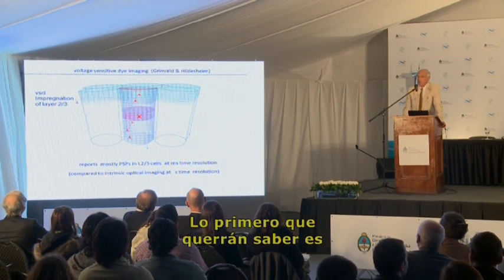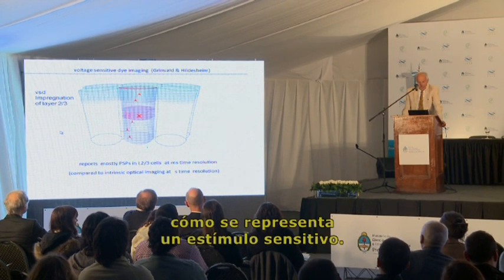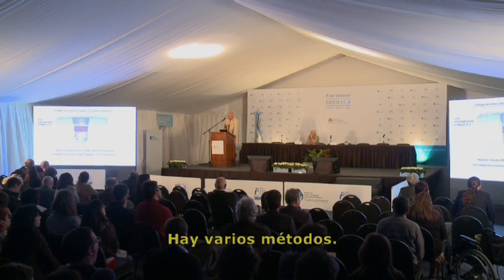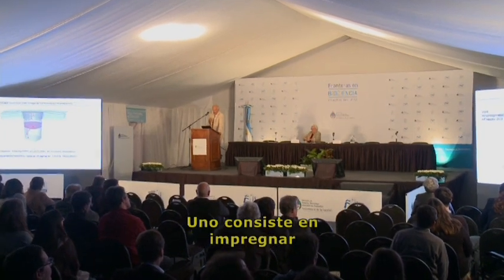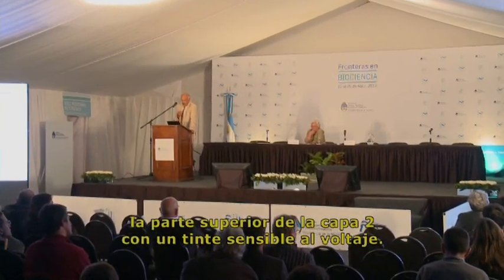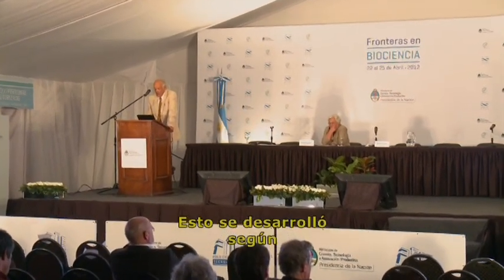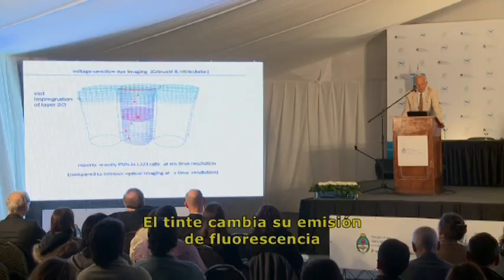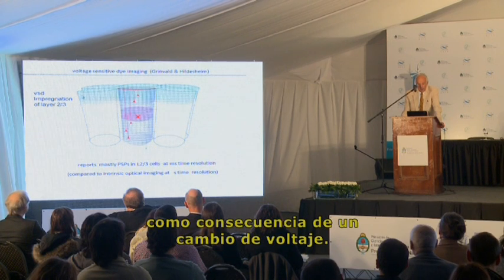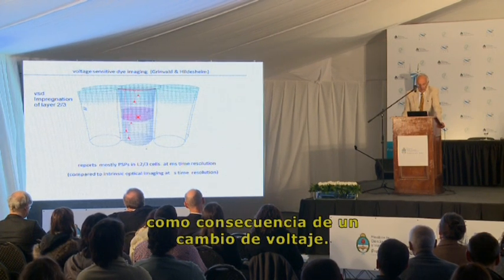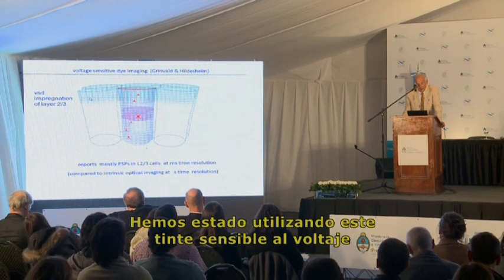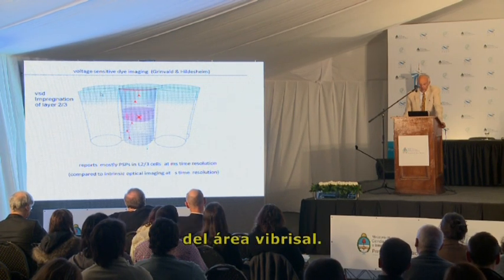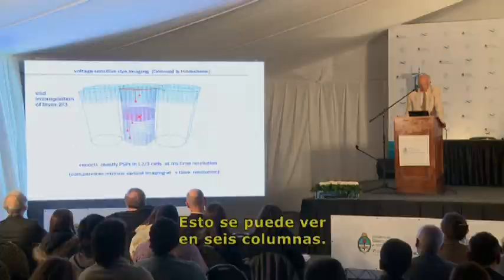The first thing you want to know is how a sensory stimulus is represented, and there are several methods. One of them is to impregnate the upper part, layer 2, with a voltage-sensitive dye developed by Amiram Grinwald and Rina Hildesheim. This dye changes its fluorescence emission upon a change in voltage, and we have been using this voltage-sensitive dye to impregnate the upper part of the vibrissae area. This is shown for 6 columns.